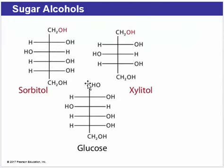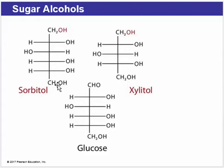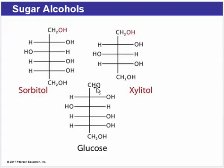On this slide is the Fischer projection of D-glucose, and to its upper left is the Fischer projection of sorbitol. We can see that sorbitol is the reduced form of glucose — everything is exactly the same, except the one carbon has a hydroxyl group instead of an aldehyde.